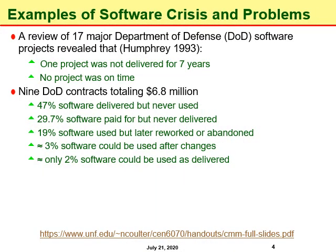To understand the importance of software process management we will discuss some examples of software crisis and the resulting problems. The facts related to these crises also serve as the motivation for process improvement.